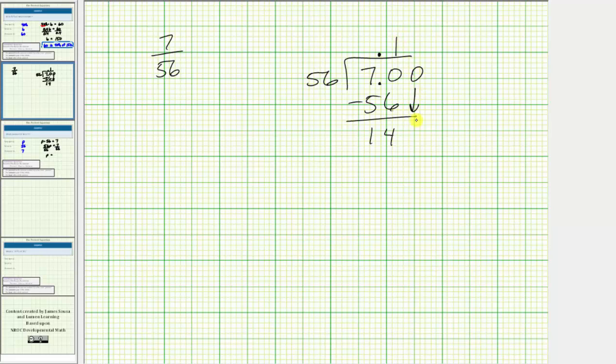Add another zero and bring it down. And now determine how many 56 is in 140, which is 2. 2 times 56 equals 112. Subtract. 140 minus 112 is equal to 28.